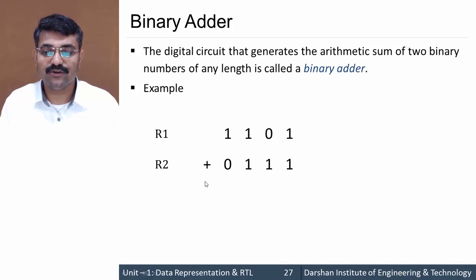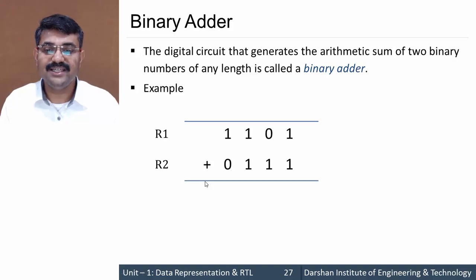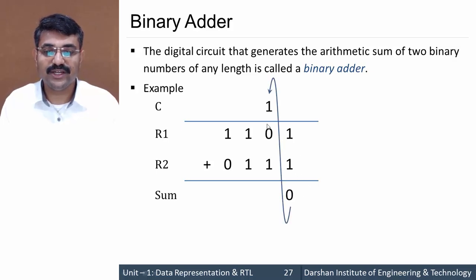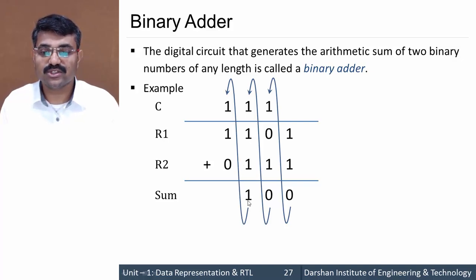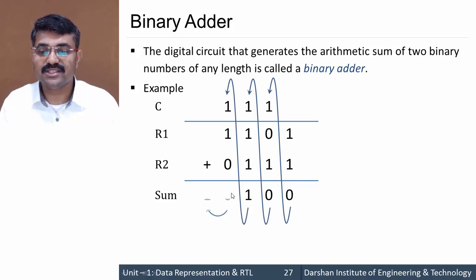We want to perform the addition of these two numbers. In the binary number system, 1 plus 1 gives sum 0 and carry 1. For the next group of bits, 1 plus 0 plus 1 gives sum 0 and carry 1. Then 1 plus 1 plus 1 gives sum 1 and carry 1. Finally, 1 plus 1 plus 0 gives sum 0 and carry 1.